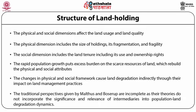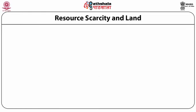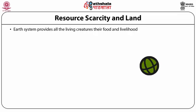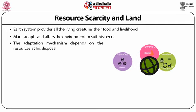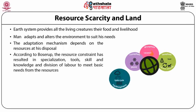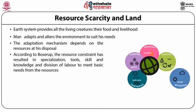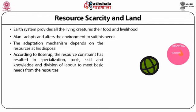The traditional perspectives given by Malthus and Boserup on population and agricultural intensification are incomplete, as their theories do not incorporate the significance of intermediaries in population-land degradation dynamics. The resource scarcity and land — the earth system provides humans and all other living creatures their food and livelihood. Man adapts and alters the environment to suit his needs. According to Boserup, resource constraint has resulted in specialization, tools, skill and knowledge, and division of labor to meet basic needs from resources.